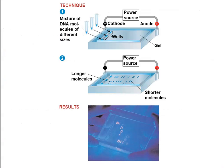In a gel, DNA molecules are placed in wells; longer molecules stay near the top and smaller ones move to the bottom. A staining chemical—such as ethidium bromide or a fluorescent dye—binds to the DNA pieces so they can be visualized when placed under a light source that illuminates those chemicals bonded to the DNA.